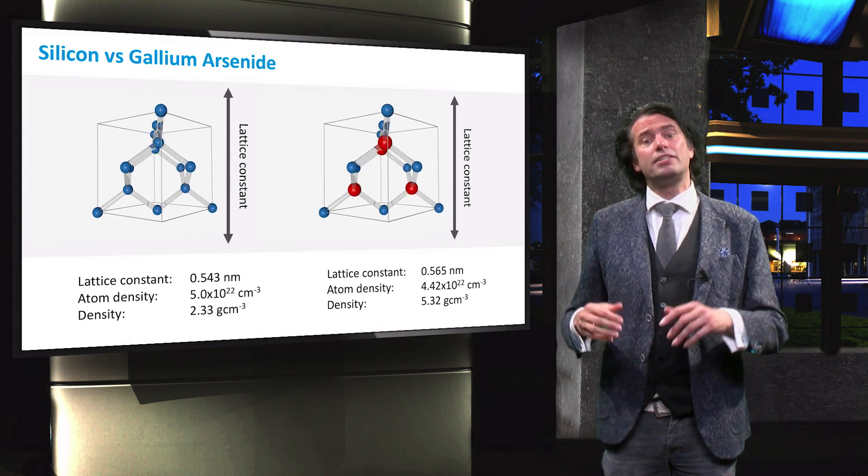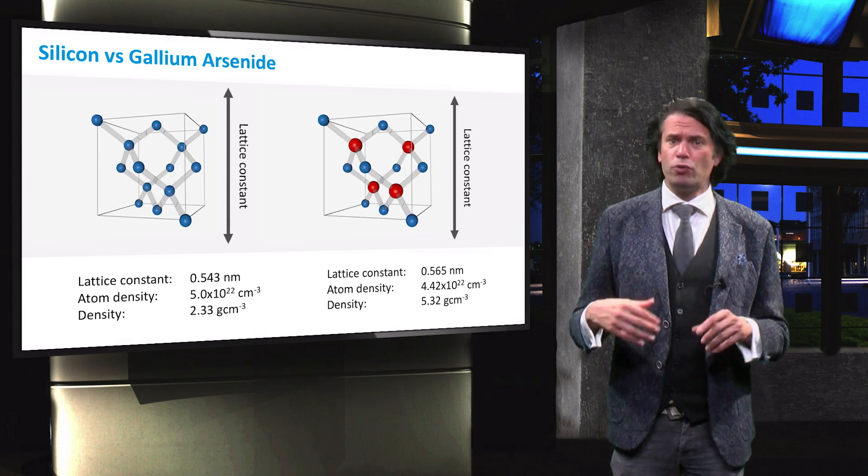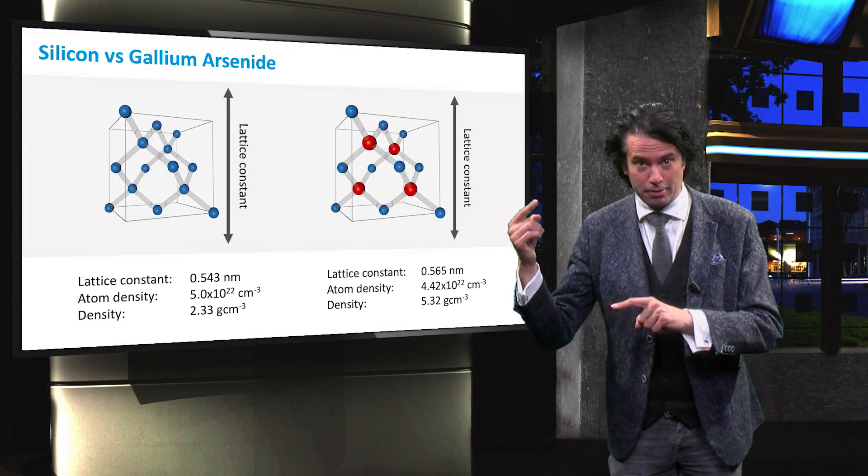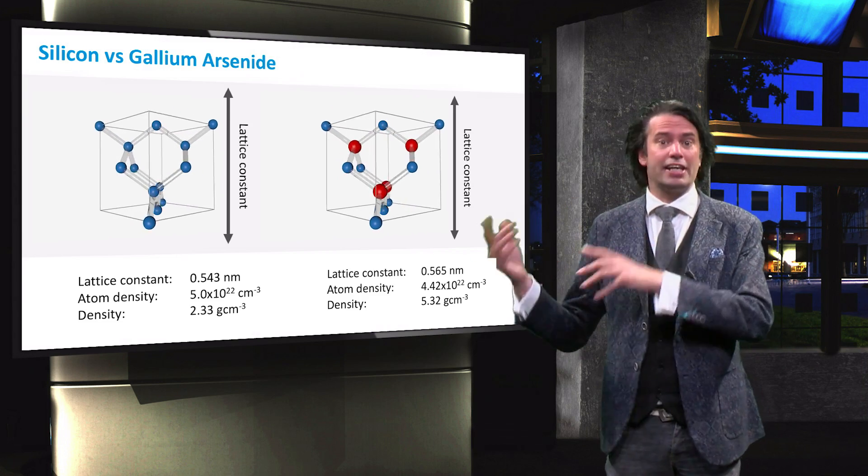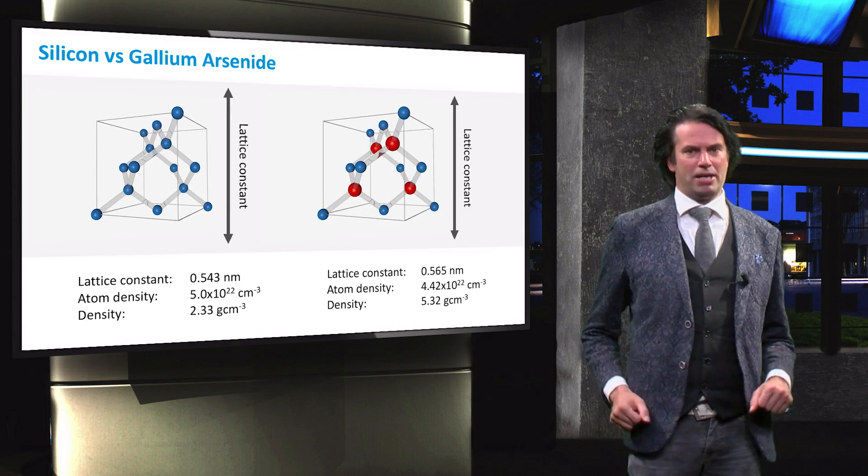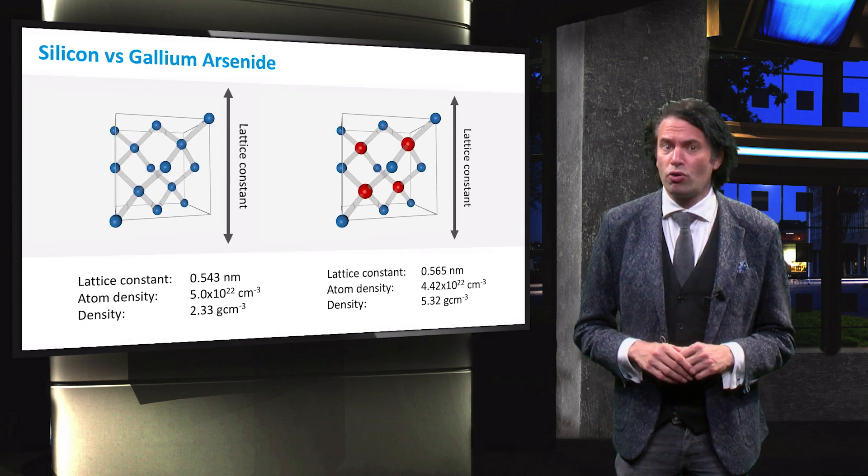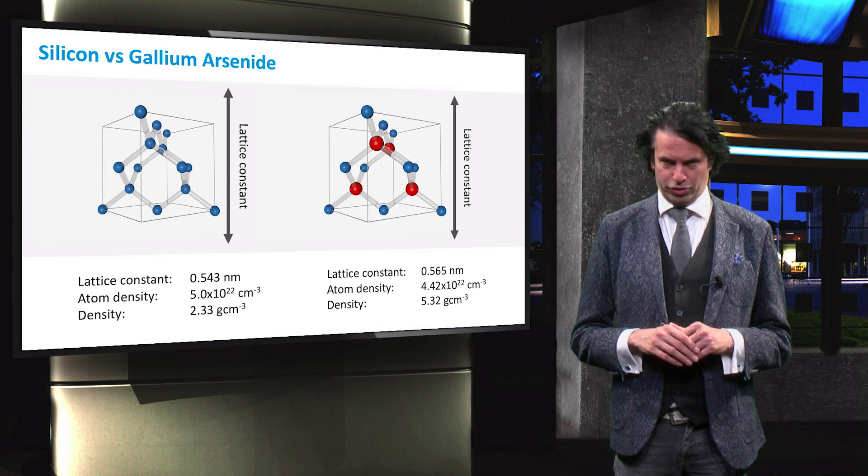whereas gallium arsenide is a crystalline structure in which every gallium atom is neighboring four arsenic atoms, and the other way around, every arsenic atom is neighboring four gallium atoms. The gallium arsenide lattice structure is a so-called zinc blende crystal lattice structure.